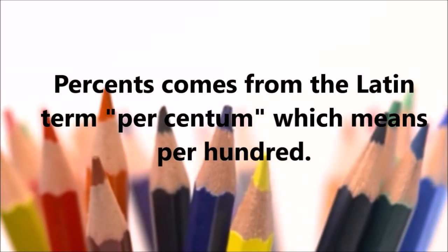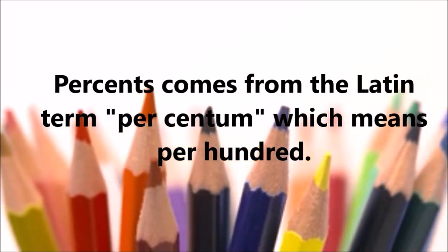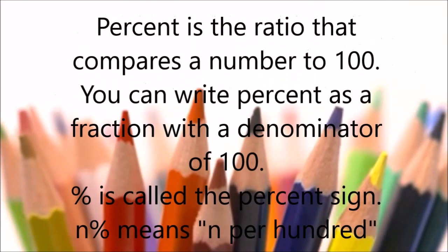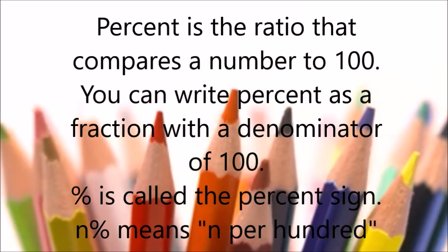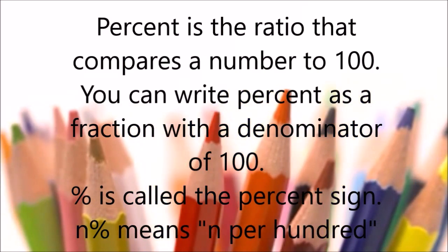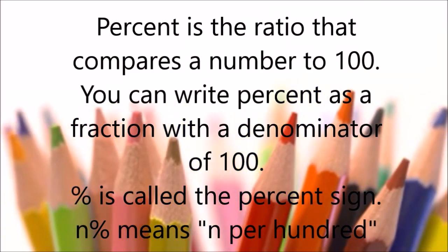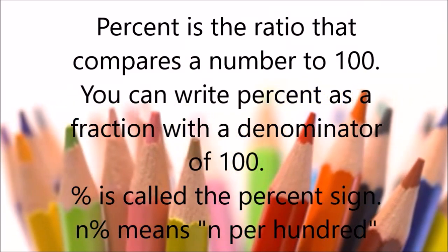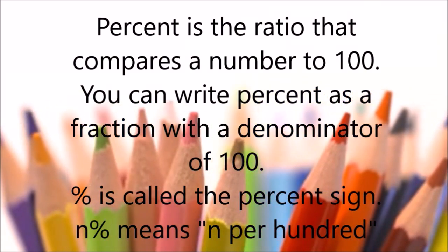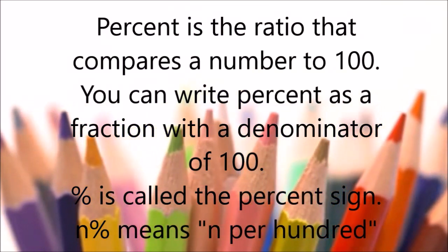The word percent comes from the Latin term 'per centum,' which means per hundred. Percent is the ratio that compares a number to 100. You can write percent as a fraction with a denominator of 100. The symbol is called the percent sign. In general, the notation n percent means n per hundred.